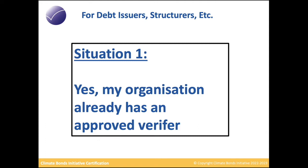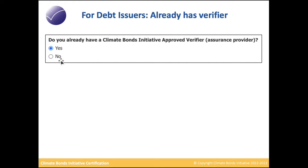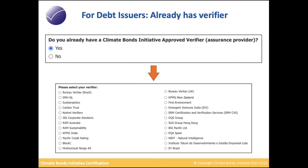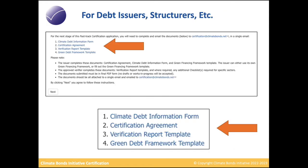From here you have three options. In situation one, your organization already has an approved verifier. You'll be asked 'Do you already have a verifier?' — choose Yes. You'll then be taken to a filtered list showing only verifiers approved to do solar certifications in Brazil. Once you choose your verifier, you'll be provided with the documents and instructions for what to do next.